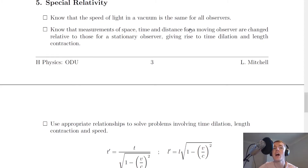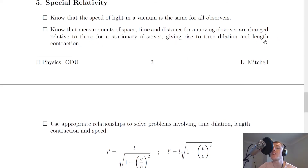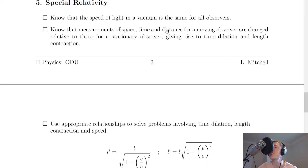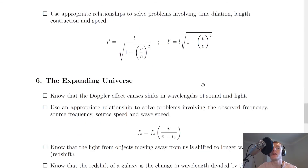Next you should know that measurements of space, time, and distance for a moving observer are changed relative to those for a stationary observer, giving rise to time dilation and length contraction. Time dilation and length contraction are a consequence of stationary and moving observers not being able to agree on measurements of time and distance.